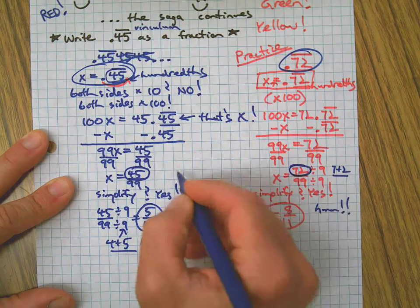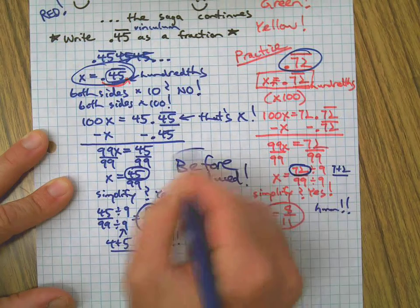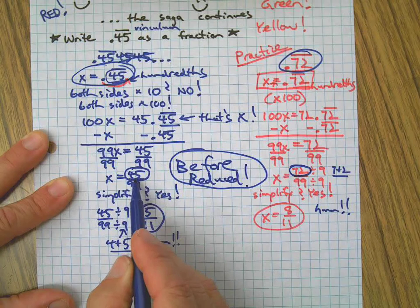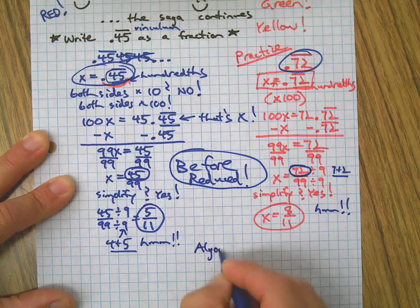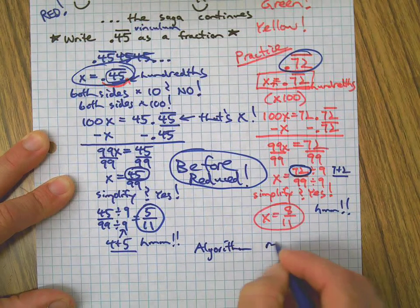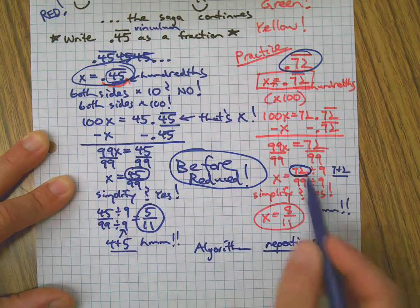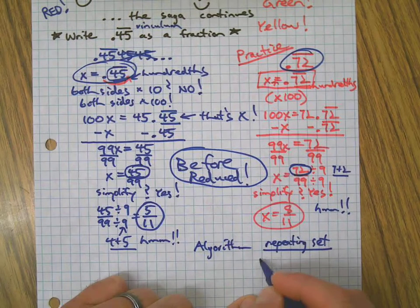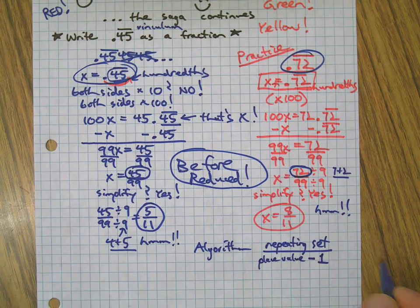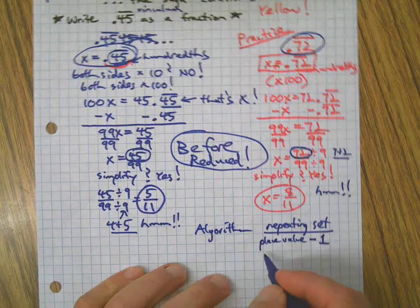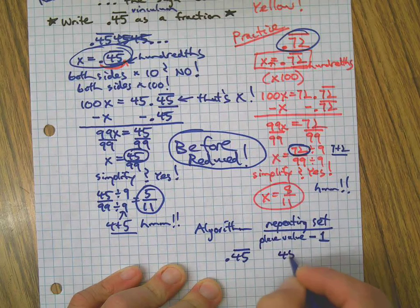Well, let's look at what we ended up with on the top of our fractions before it was simplified. What we ended up with on top before it was reduced or simplified - very important - whoo - was 45, which, that's the number that repeated up here. So our algorithm is going to be this: the repeating set goes on the top, right, because we see it in both cases.